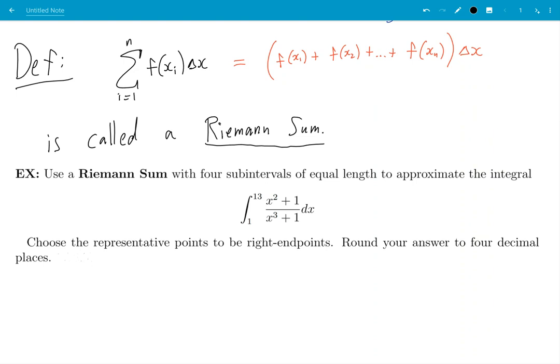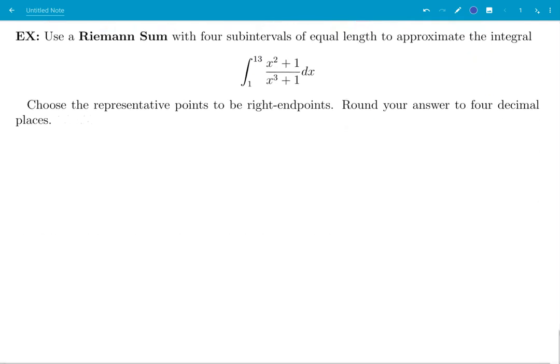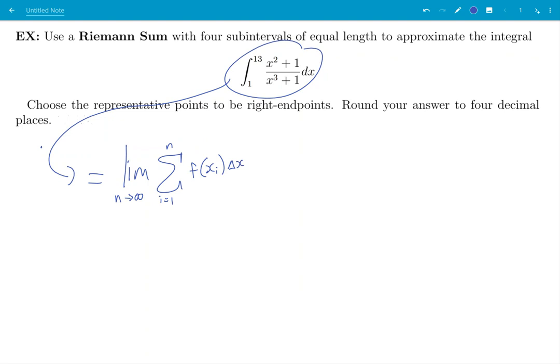Now let's see, for this example, the integral here is equal to limit as n goes to infinity of a Riemann sum. i is equal to one up to n, f of x_i times delta x.